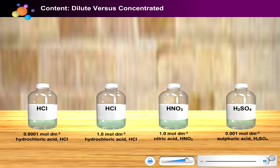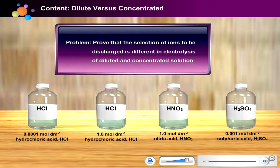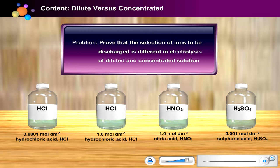So far, you have learned the two factors that affect the ions to be discharged at the electrodes. Let's put your knowledge to test. Have your worksheet ready. Your aim is to prove that ions which are selectively discharged at the electrodes are different between concentrated and diluted solution. To begin your investigation, you must first make a hypothesis. Can you think of one good hypothesis? Discuss in your group and write it down in your worksheet.